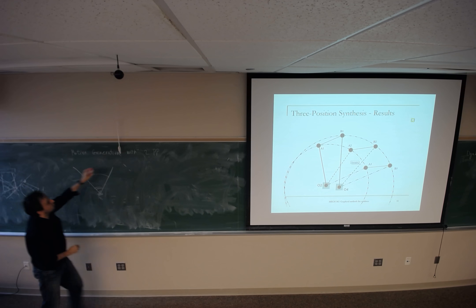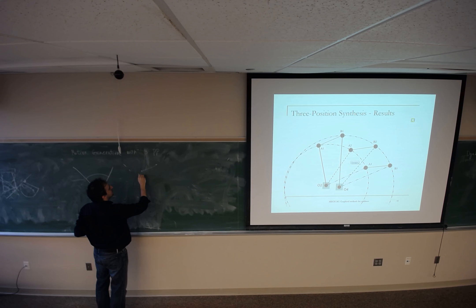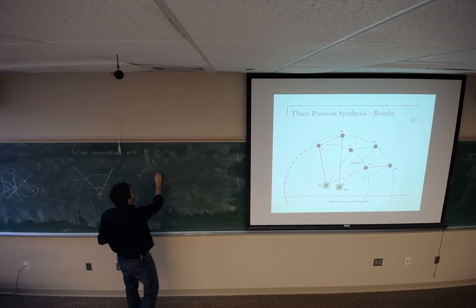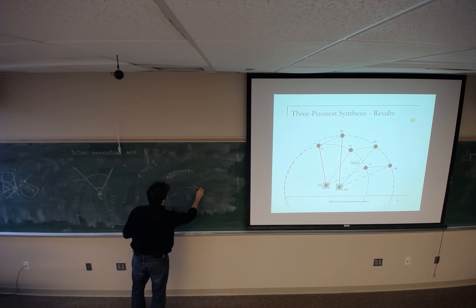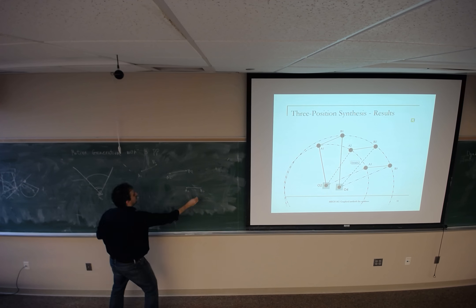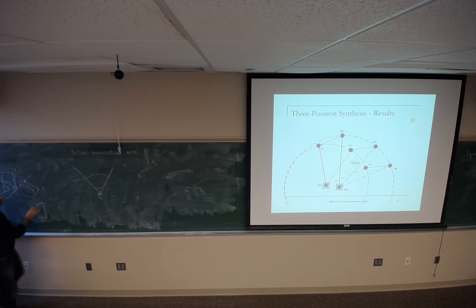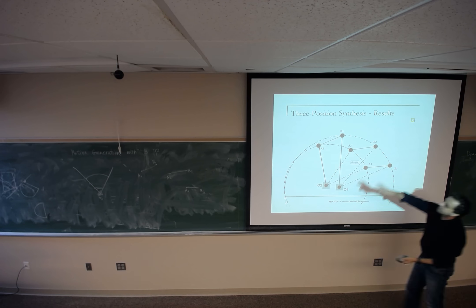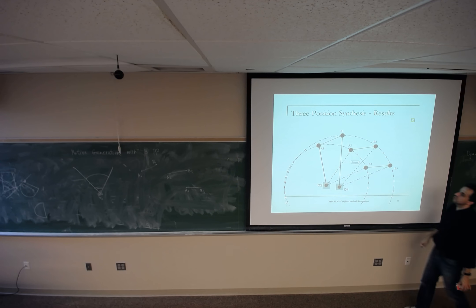Now I'm going to move from two precision points to three precision points. What if we are given three desired positions? Suppose you would like to move this object to a first position, a second position, and a third position. You pick a line from the object and track the motion of that line: A1, B1 for the first position; A2, B2 for the second; and A3, B3 for the third.